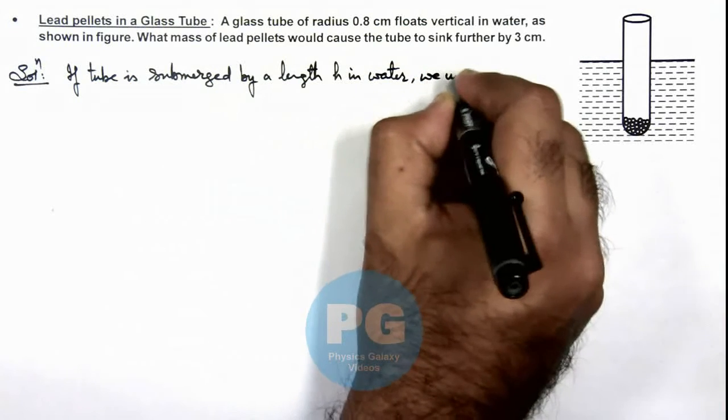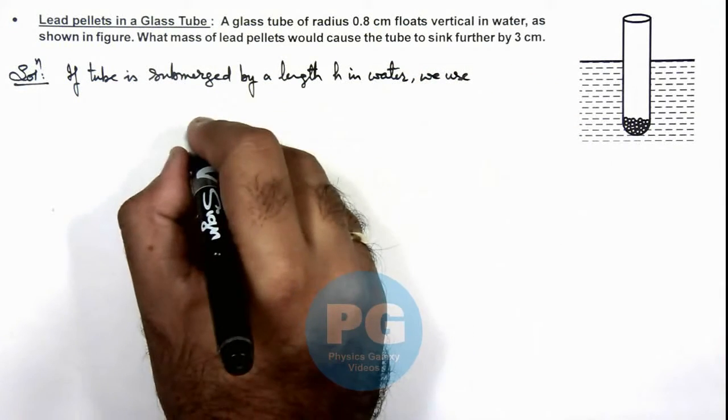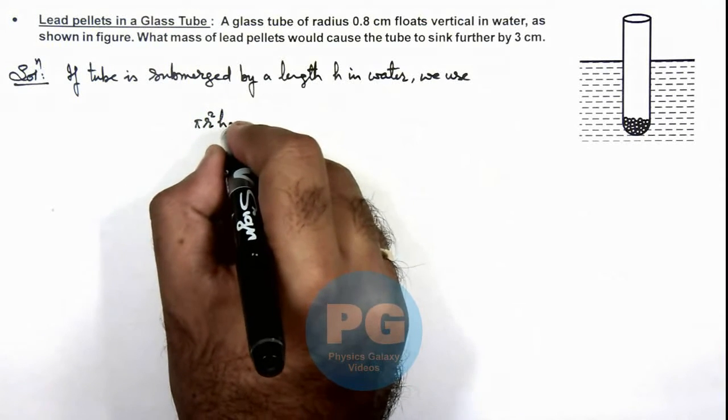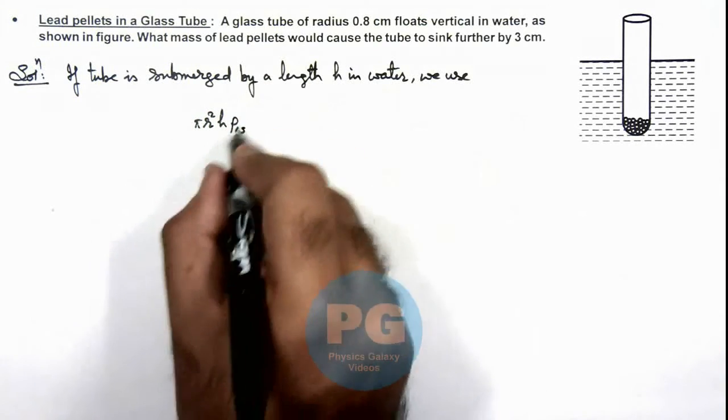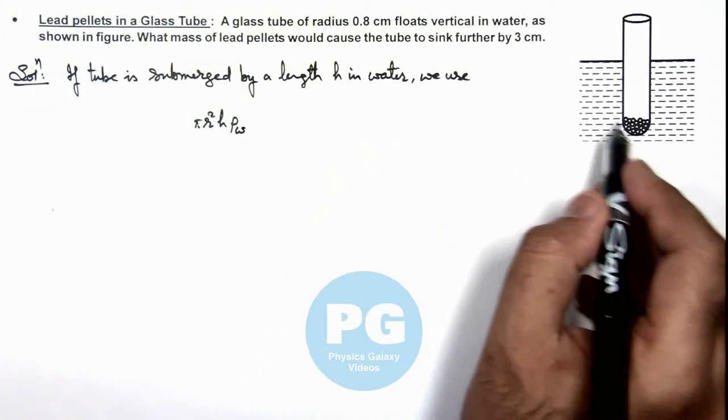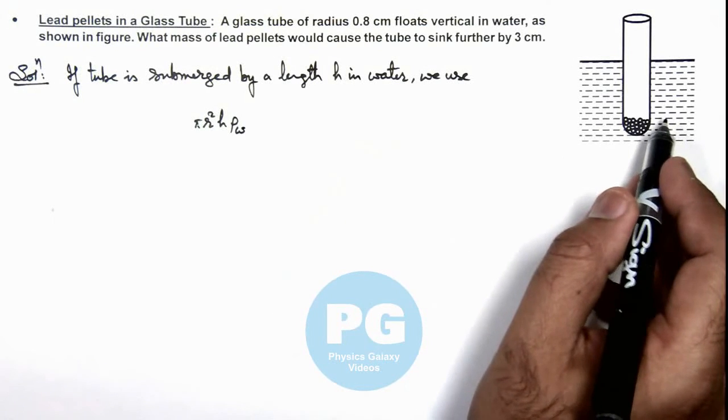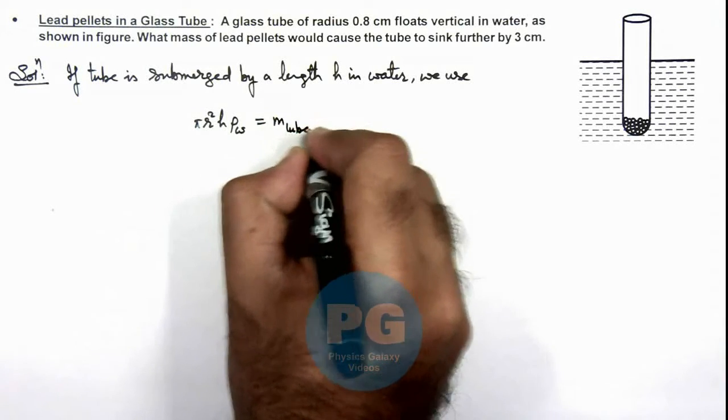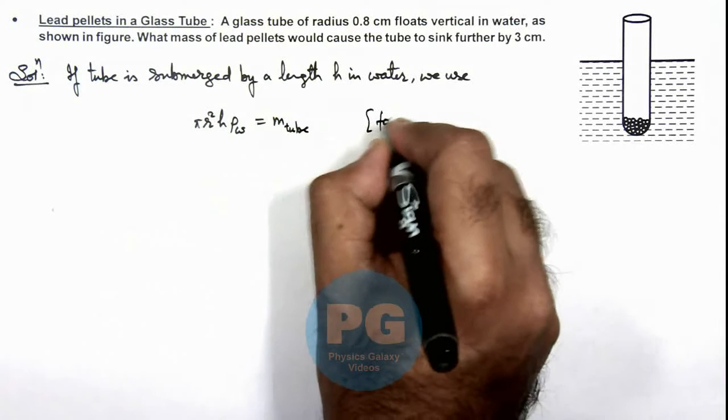Here we use πr²h multiplied by ρ of water, which is the mass of liquid displaced. It must be equal to the mass of tube for floatation.